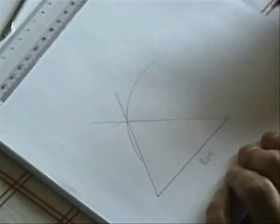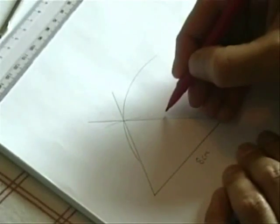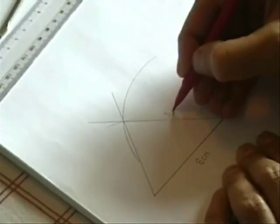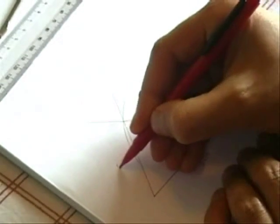And of course, what we need to do now is to label. And this was 7cm and this was 6cm.